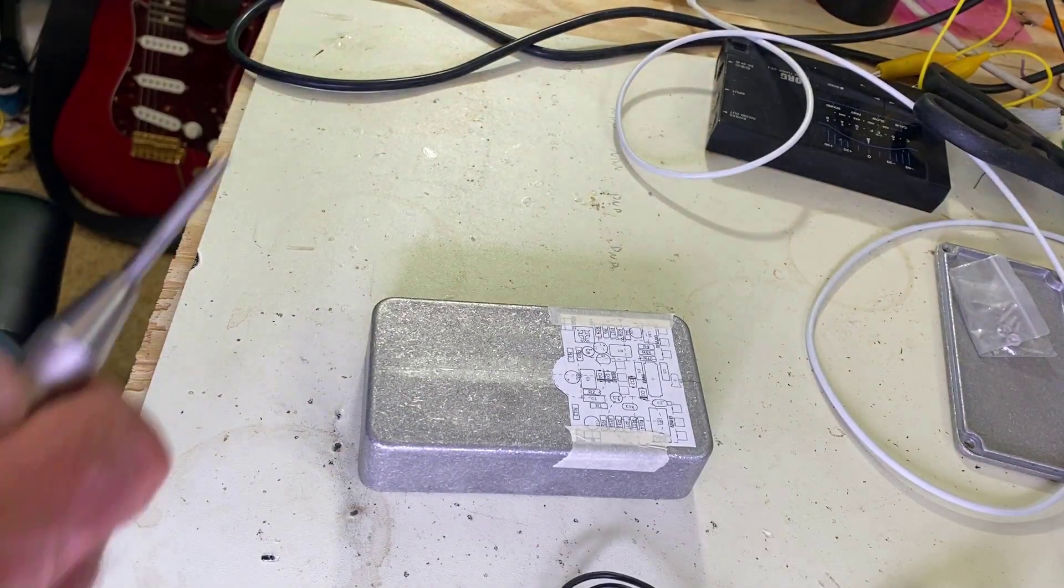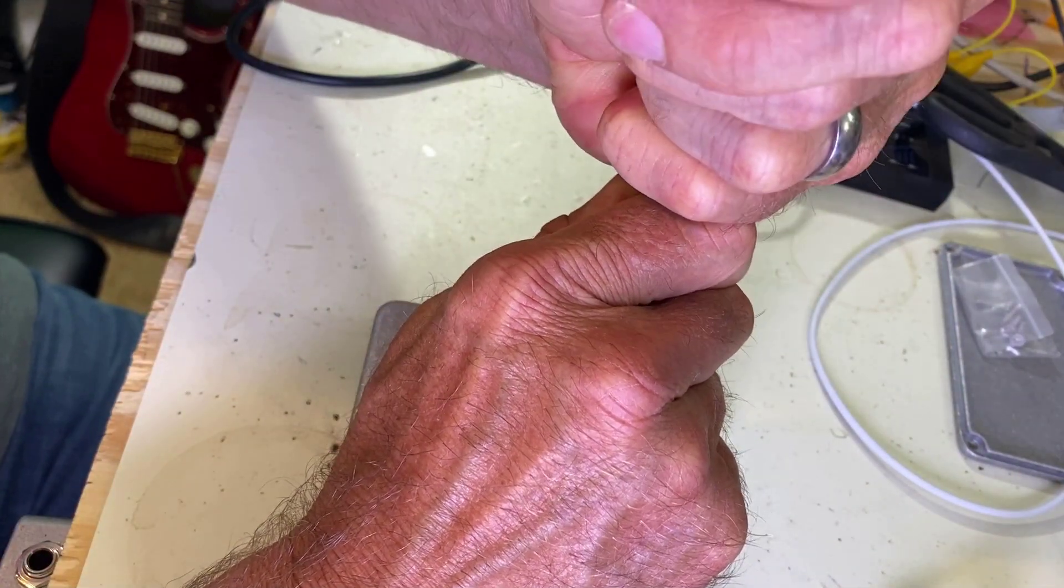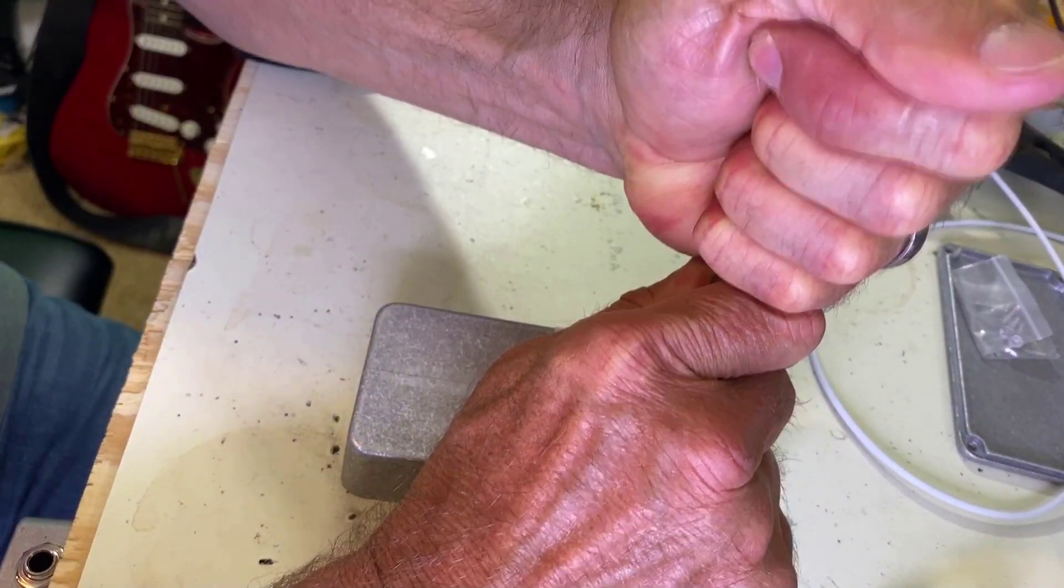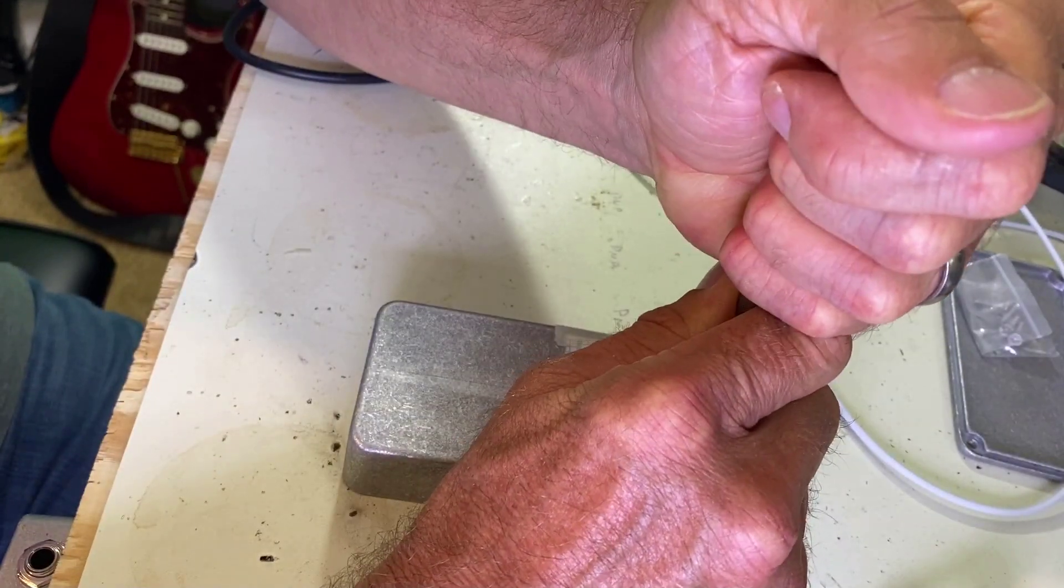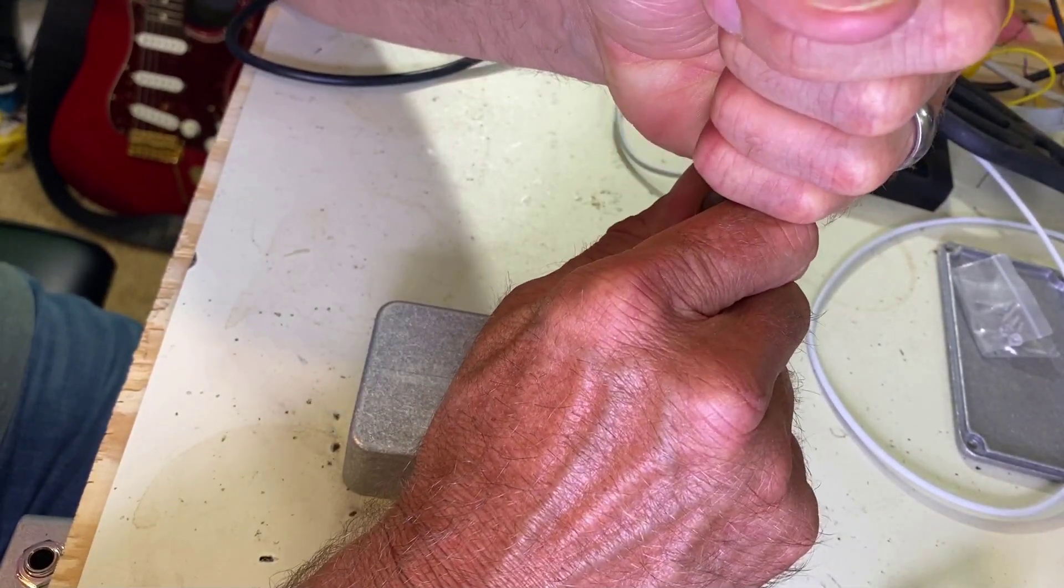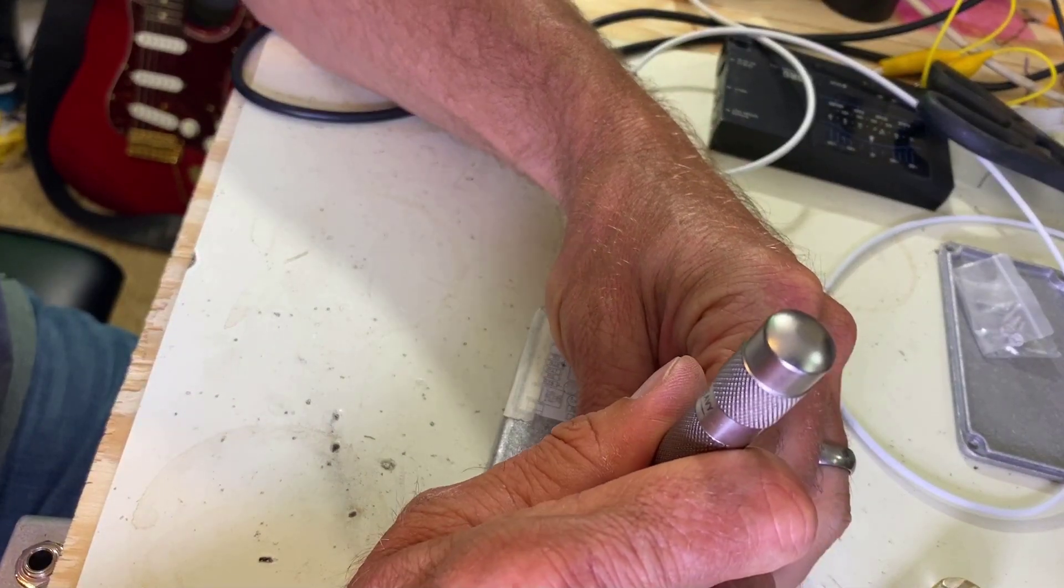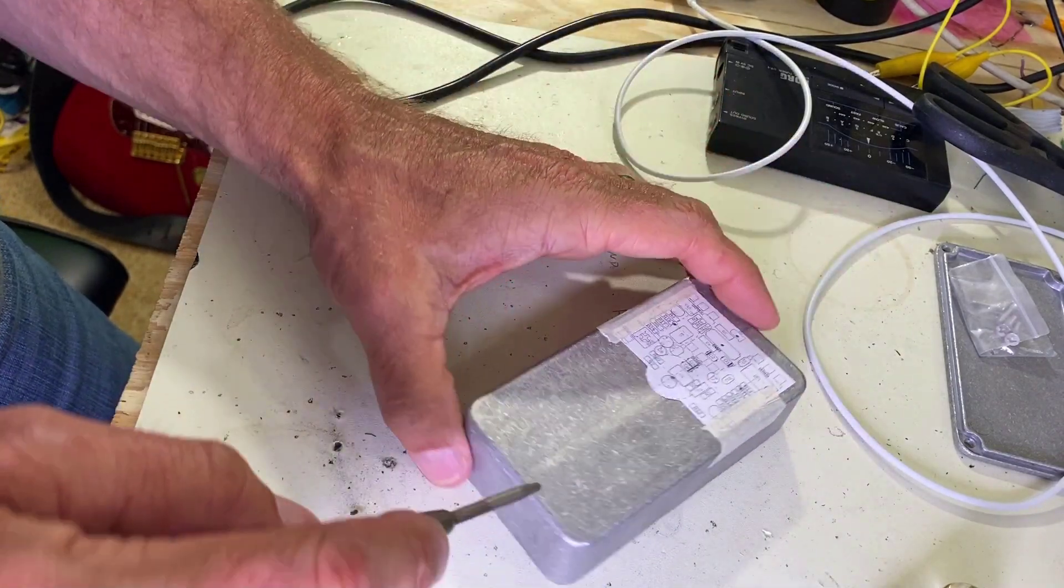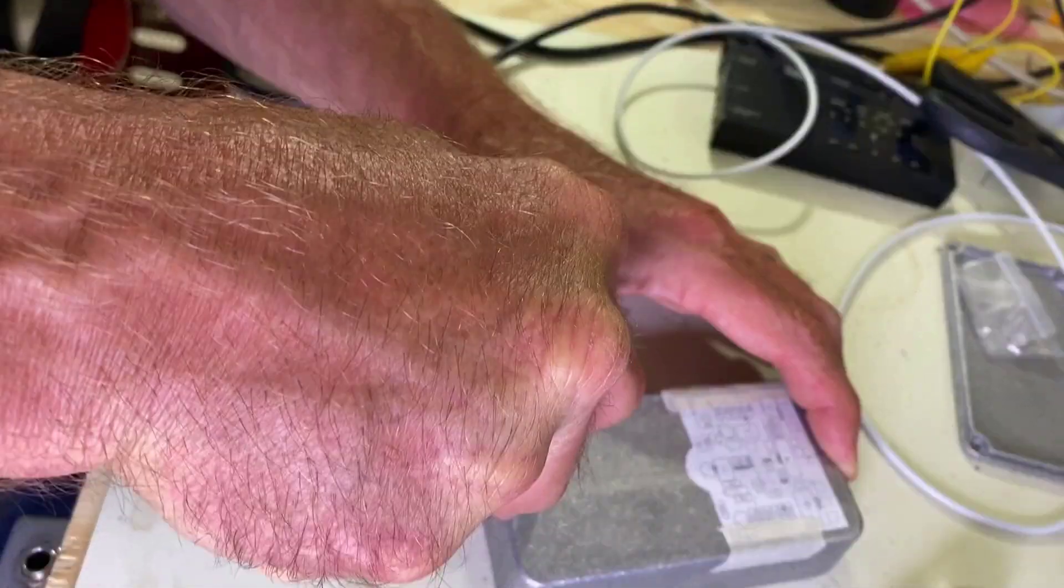We're going to use our center punch. And we're going to get right on those marks where we're going to make the holes. And we're going to give it a couple good hits. There we go. We're going to make a mark for the foot switch here. And to show you, if you make a mistake and it's off by a little bit, you could do it angled like this. And it will move it in that direction just a little bit.